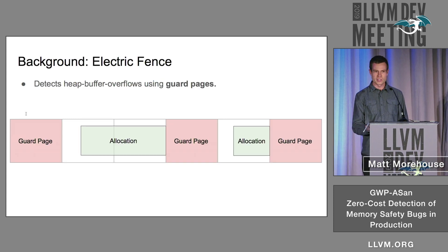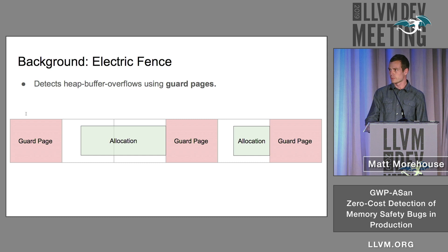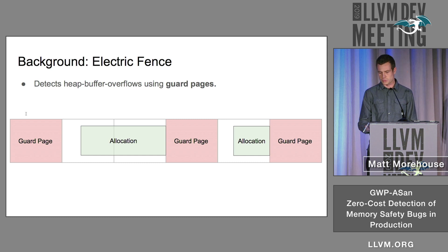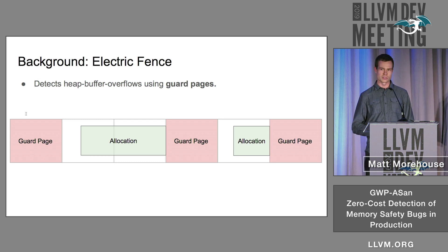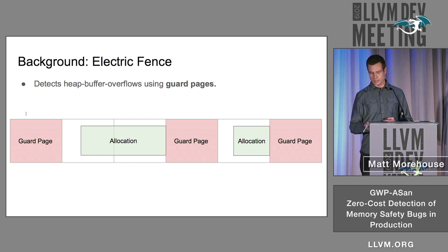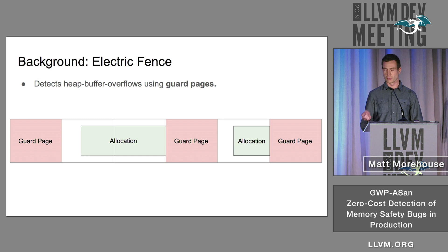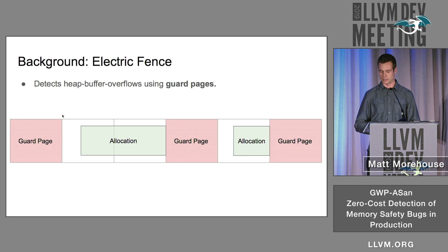GWP-ASAN is based on the classic Electric Fence malloc debugger. The way Electric Fence works is it puts guard pages after each heap allocation. So if you overflow that allocation, you'll touch the guard page and trigger a segfault immediately. In this way, Electric Fence detects the bug at the point it happens, rather than allowing a silent memory corruption that you then have to debug later.